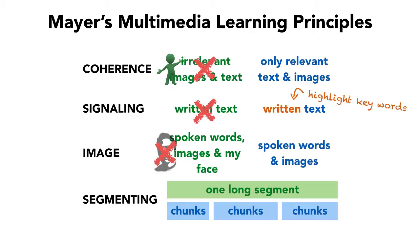And the segmenting principle — this is one that we didn't talk about. What it says is that learners do better when the material is presented in user-paced segments rather than one continuous unit. This is also known as chunking, and this is what we'll see with YouTube videos that are 10 minutes in length as opposed to one long 60-minute lecture. If students didn't get the concept in that one 10-minute video, they can go back and watch it again. So they have the ability to control the pace.